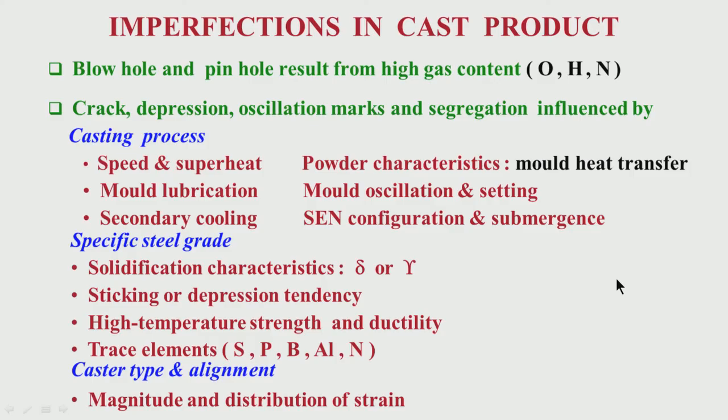Segregation will always be there — all solutes will try to be more in the liquid than in the solid. Because of increased solute content in the remaining liquid, the portion solidifying at the later stage has more of these elements, and the solidus temperature is always coming down. These are all issues which must be taken care of to have a good cast product; otherwise all these types of defects will come.